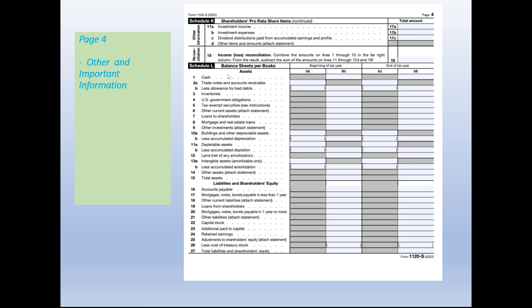Also on page 4 is Schedule L, where you report the balance sheet per books. As mentioned earlier, you must prepare financial statements before you can prepare the tax return. Here you report how much in assets, liabilities, cash, and accumulated income the company holds. You report both the beginning and end of the tax year, and the beginning balance should equal the ending balance from the prior year's return.